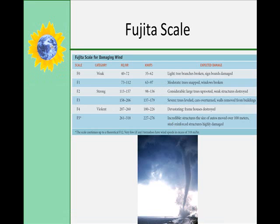The Fujita scale measures how bad a tornado is, and it is an exponential scale just like the Richter scale — going from one category to the next means it's 10 times as bad. The scale goes from 0 to 5, and theoretically continues to F12, but we have never seen one of those. We very rarely have anything above 318 miles an hour, so F5 is effectively the top. The Fujita scale is also based on how much damage occurs, not just miles per hour.